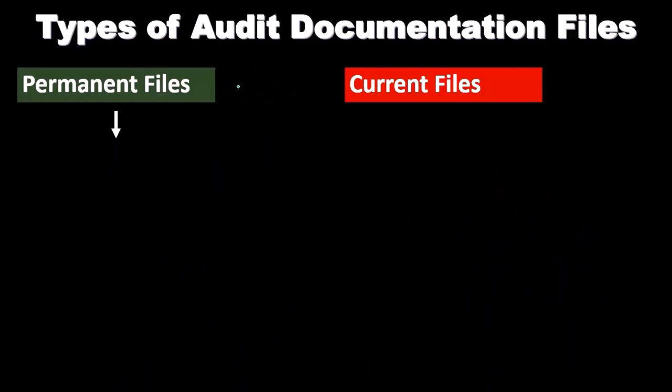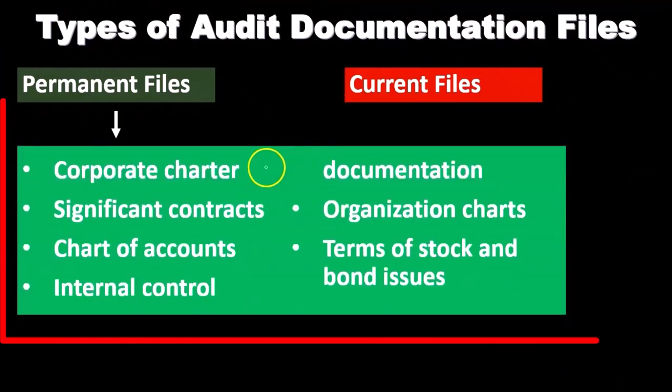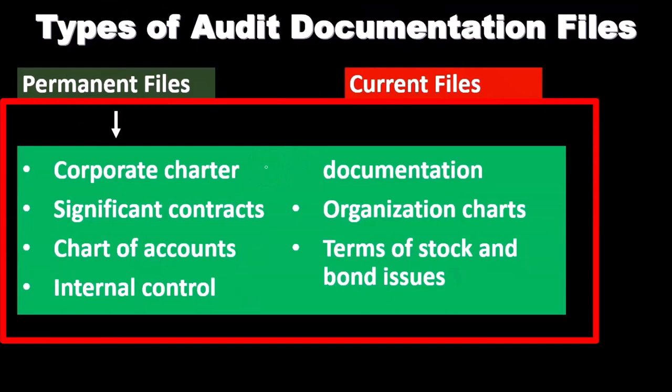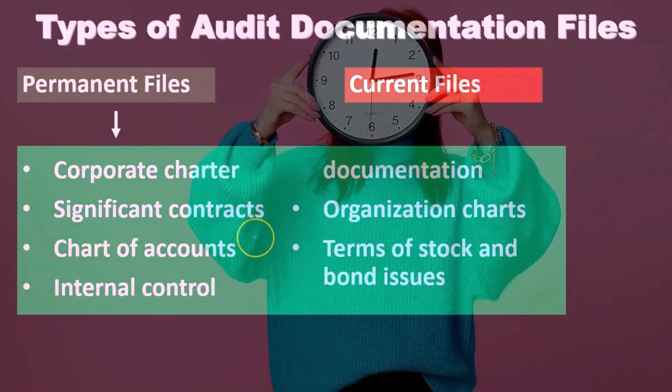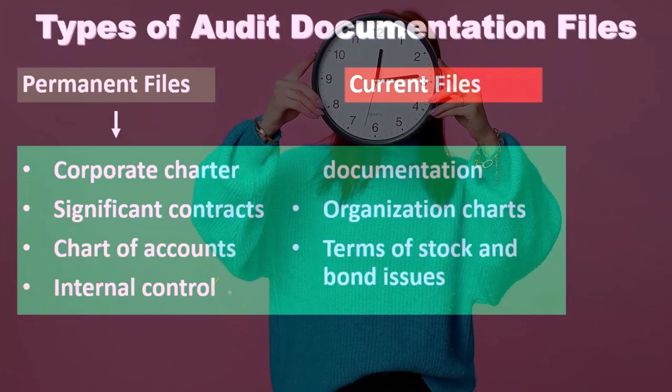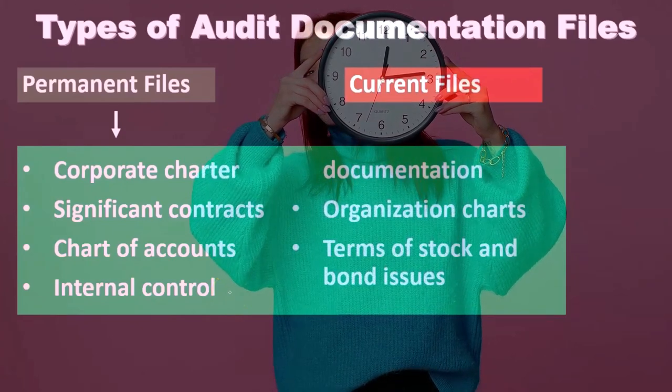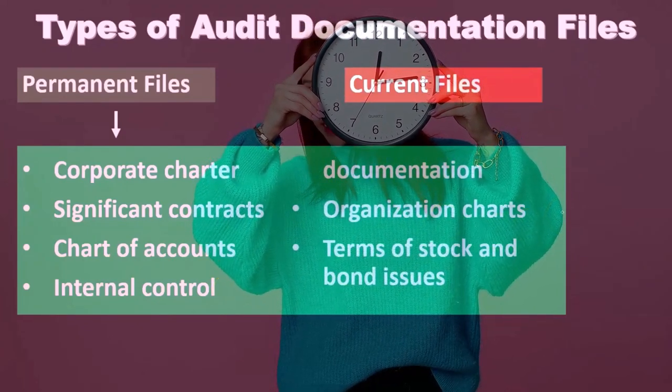When setting up your auditing system for clients in public accounting, you want to think about what types of files aren't going to change and should go in the permanent file. What types of files are going to change each year go in the current file. Typical permanent file items include the corporate charter — which doesn't change often — significant long-term contracts, possibly the chart of accounts, internal controls which can be established for a long period of time.